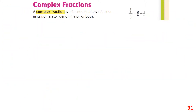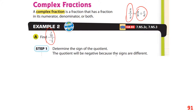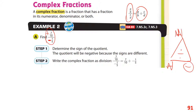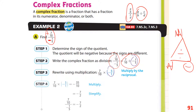Complex fractions: a over b over c over d is the same as a/b divided by c/d. This is really just a division problem. We have a positive 7 tenths divided by a negative 1 fifth, so the answer is going to be negative. When we divide fractions, we flip the second fraction and multiply across. We get 35 over 10 with a negative in front, and simplifying gives negative 7 halves.